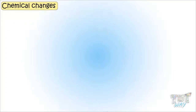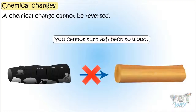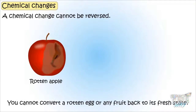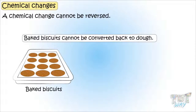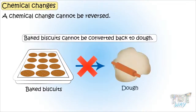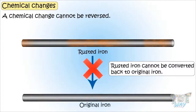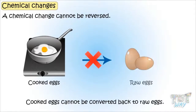A chemical change cannot be reversed. For example, you cannot turn ash back to wood. You cannot convert a rotten egg or any fruit back to its fresh state. Baked biscuits cannot be converted back to dough. Rusted iron cannot be converted back to original iron. Cooked eggs cannot be converted back to raw eggs.